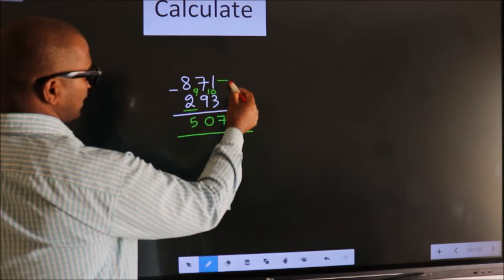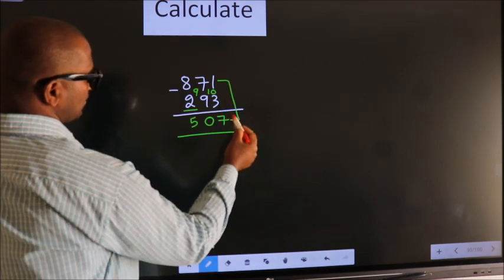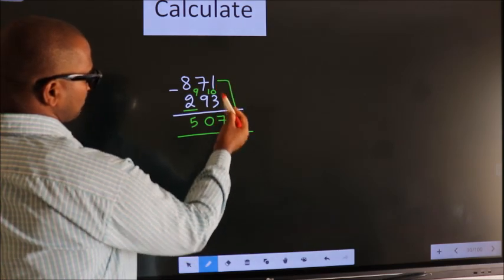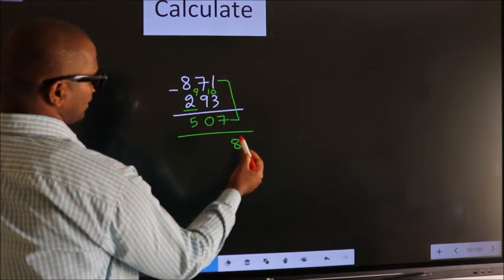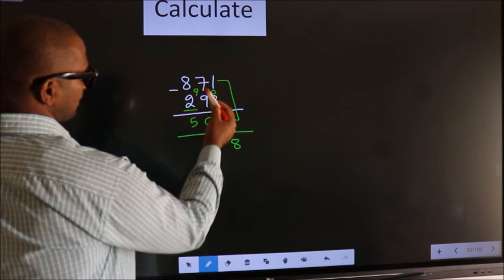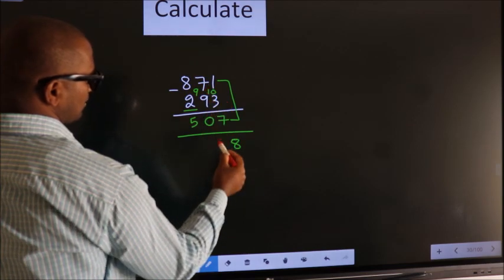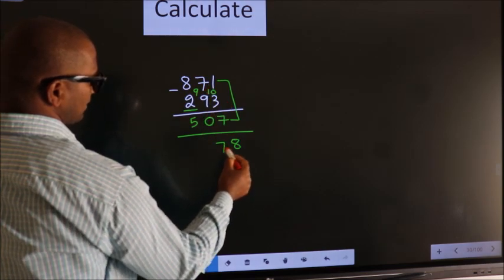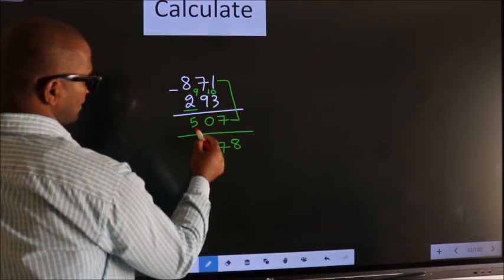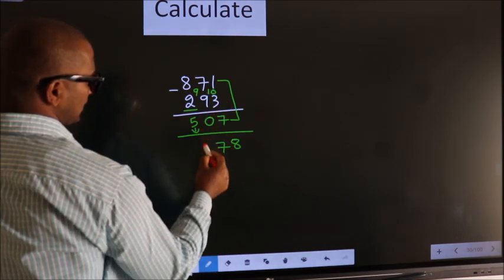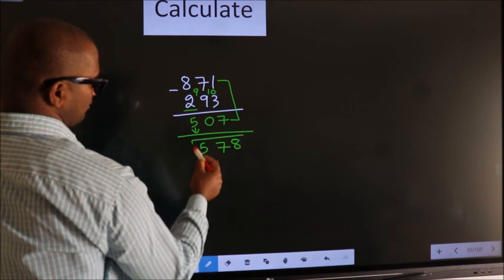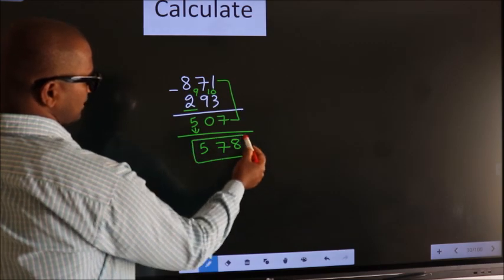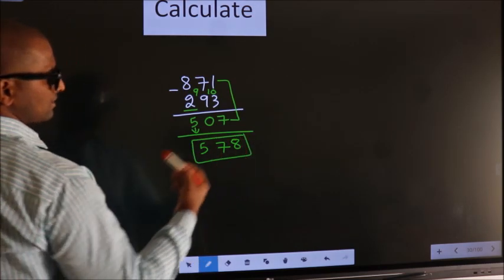Now add these two results: 1 plus 7 equals 8. Then 7 plus 0 equals 7. The first digit you write as it is. So 578 is our answer.